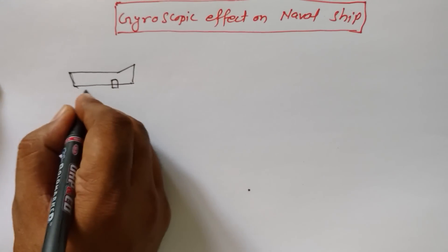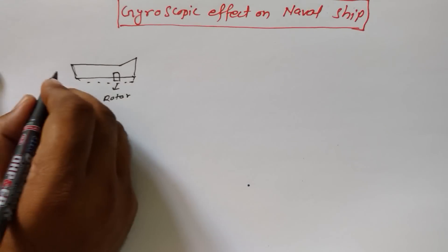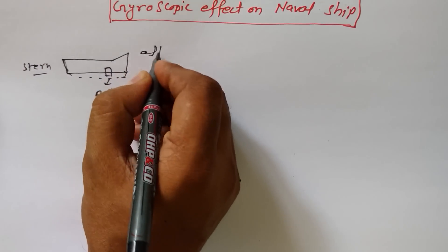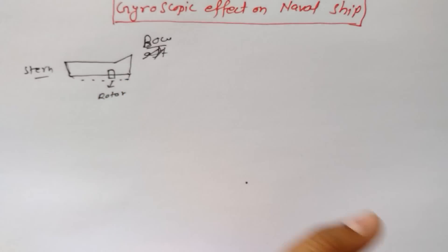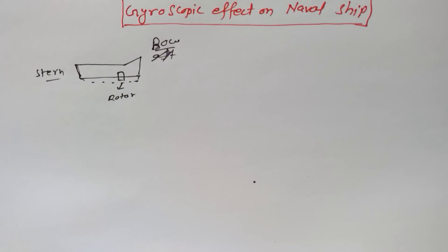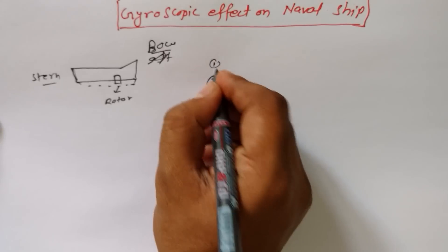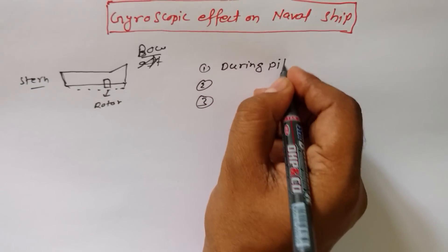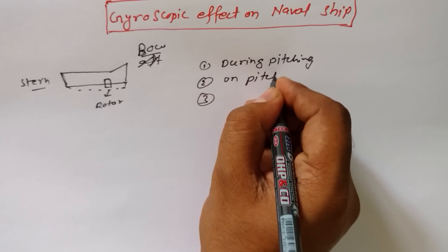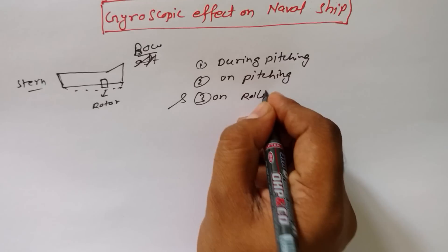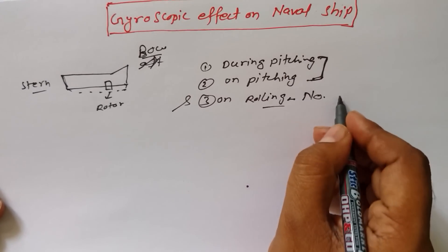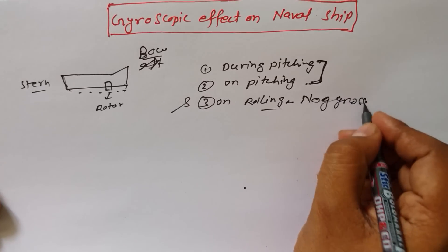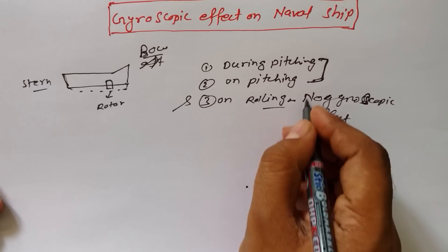For a naval ship, suppose that we have a rotor here. This is the stern - the stern is the rear end - and this is the bow. So this is a naval ship. We see three effects on a naval ship: one, two, and three - during pitching, on pitching, and on rolling. In case of rolling, there is no gyroscopic effect.